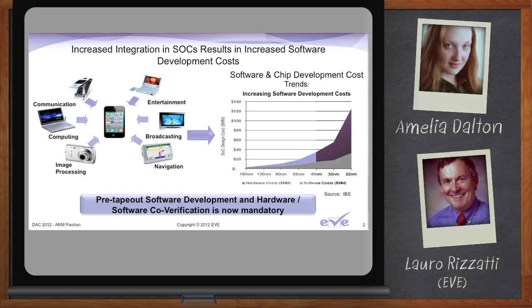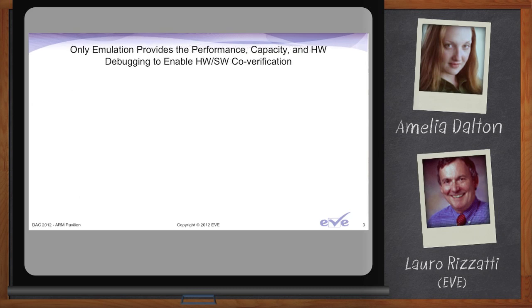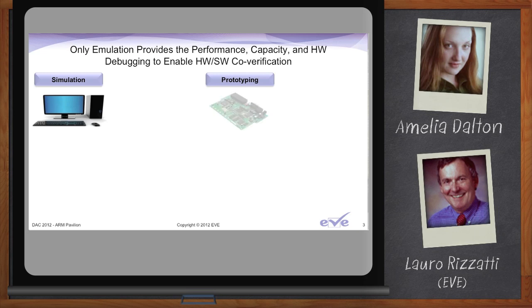So how do we cope with this growing complexity? Over time, the industry developed three major classes of verification tools. Simulators, highlighted on the left of the slide — I'm talking about RTL or gate-level simulators. At the opposite end would be prototyping, such as FPGA prototyping. And in the middle sit emulators, which is essentially what Eve specializes in.